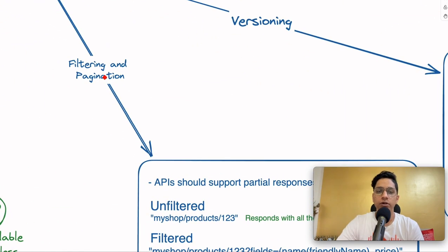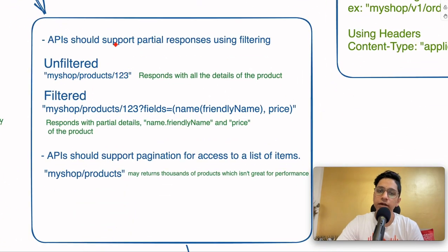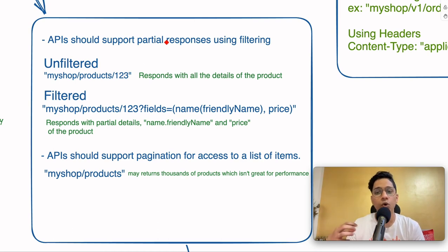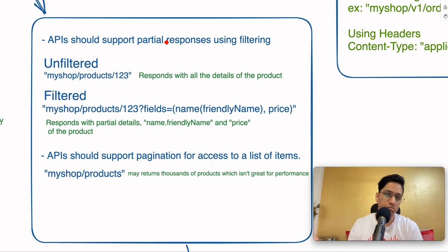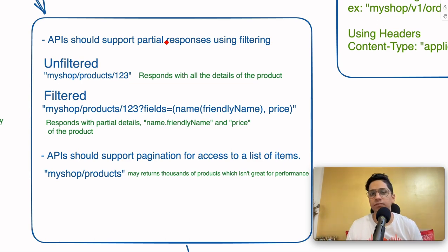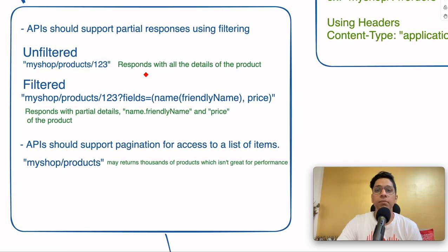The last but very important best practice is filtering and pagination. APIs should be able to support partial responses using filtering options. If you call /myshop/products/123, it responds with all details of the product — name, SKU, prices, description, images, and more. But not all clients need everything. If you're on a mobile device with limited internet connectivity, limited memory, and limited bandwidth, receiving a huge blob of product details is not great because it slows down performance and degrades the user experience. So you want to give clients the mechanism to get partial responses.